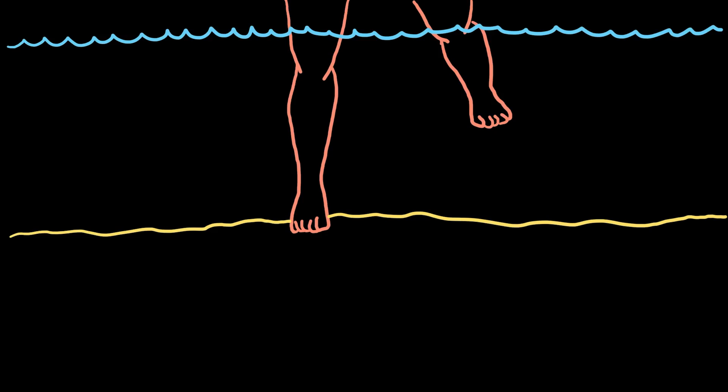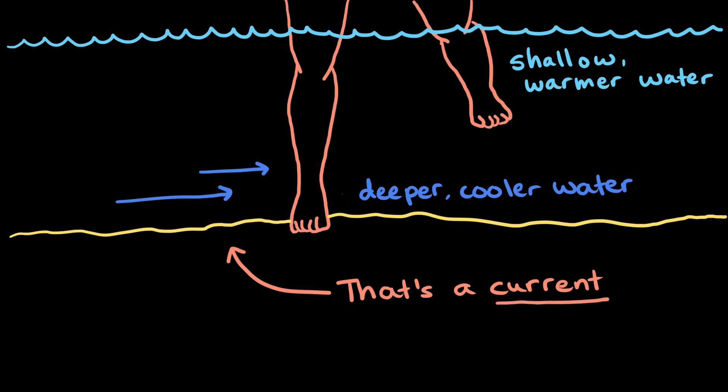Have you ever jumped into a river and felt that the deeper, cooler water closer to your feet was moving faster than the shallow, warmer water at your knees? That's a current, which is the word we use to describe how water, or even air, flows within a larger body of water or air.